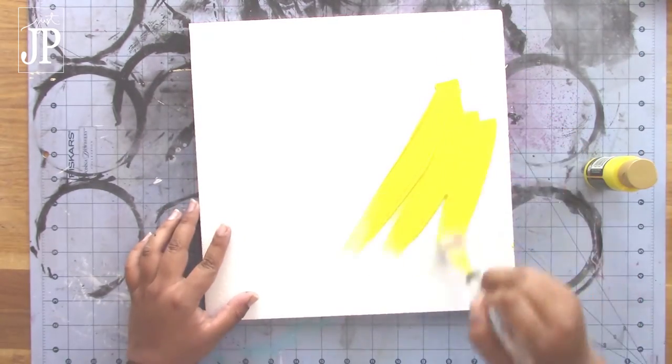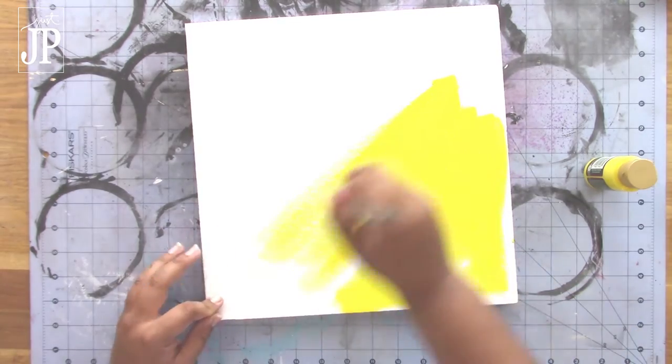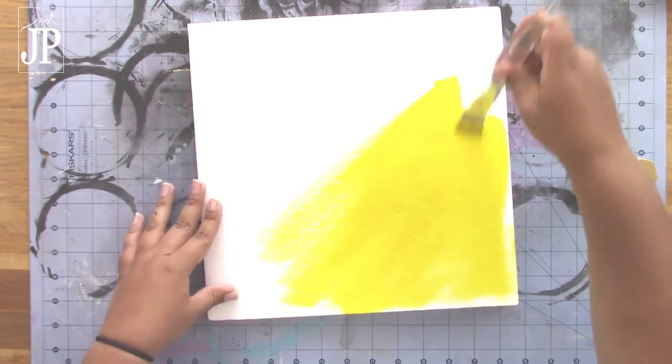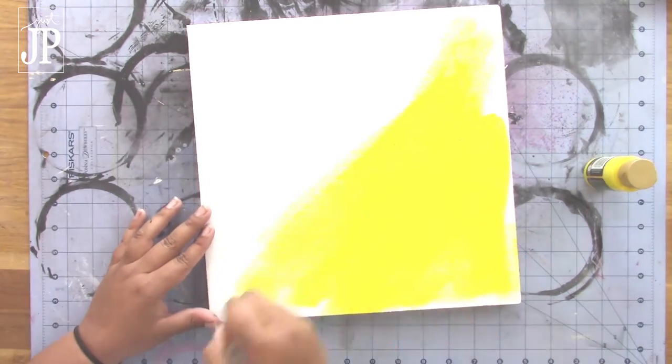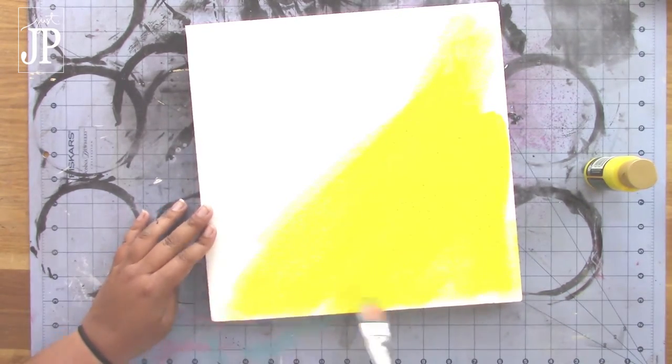So what you're gonna need is a 12 by 12, 5/8 inch sheet of smooth foam. You can get these on the smooth foam website and what we're doing is just painting the whole thing yellow with acrylic paint.